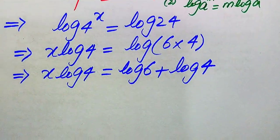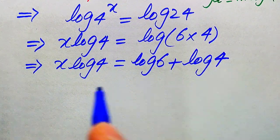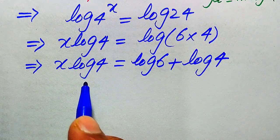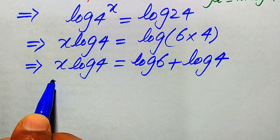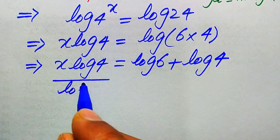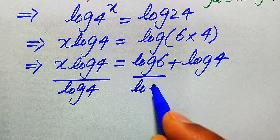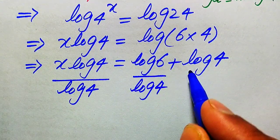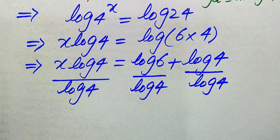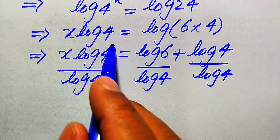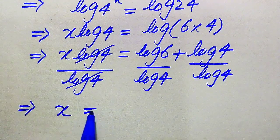We use this property on the right-hand side. To find the value of x, we need to remove log 4 from the left-hand side, so we divide both sides by log 4. This log 4 on the left cancels out with log 4, and we get x equals...